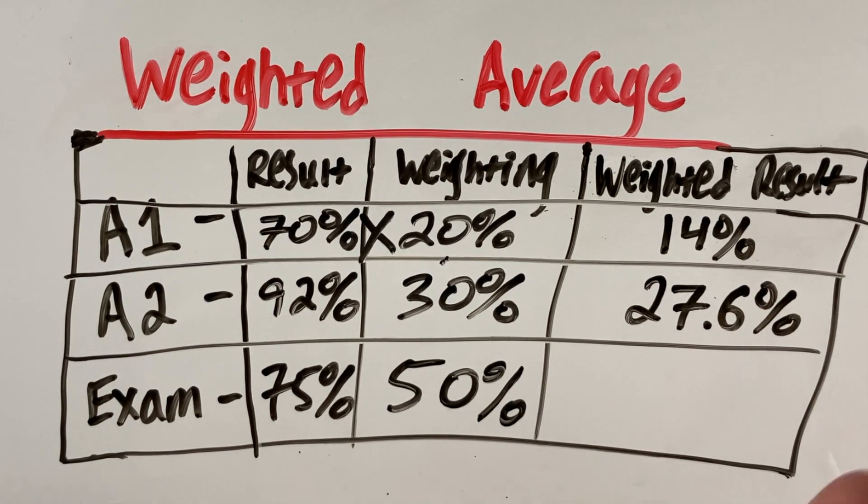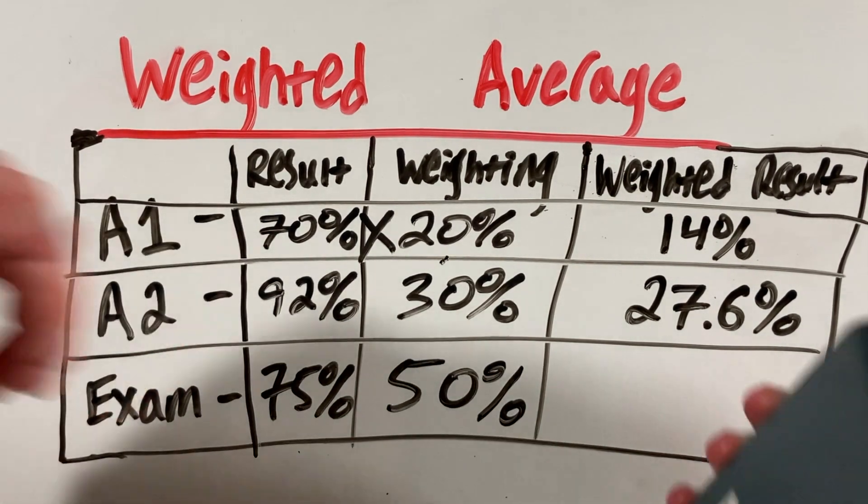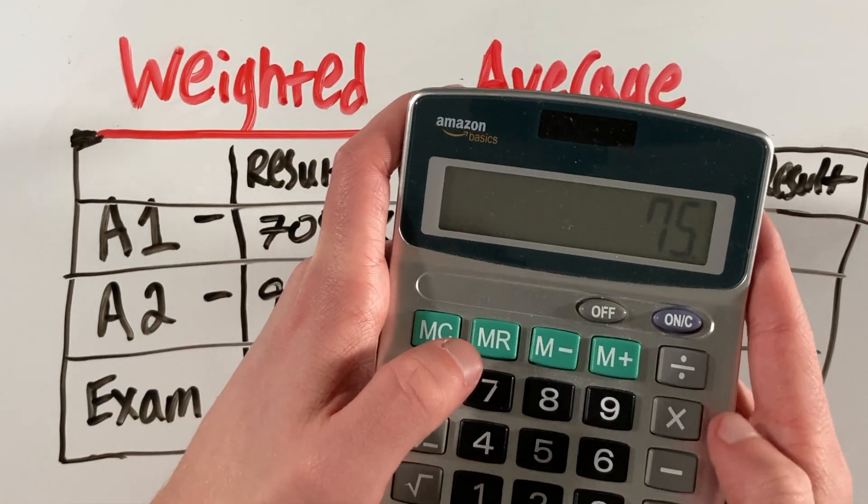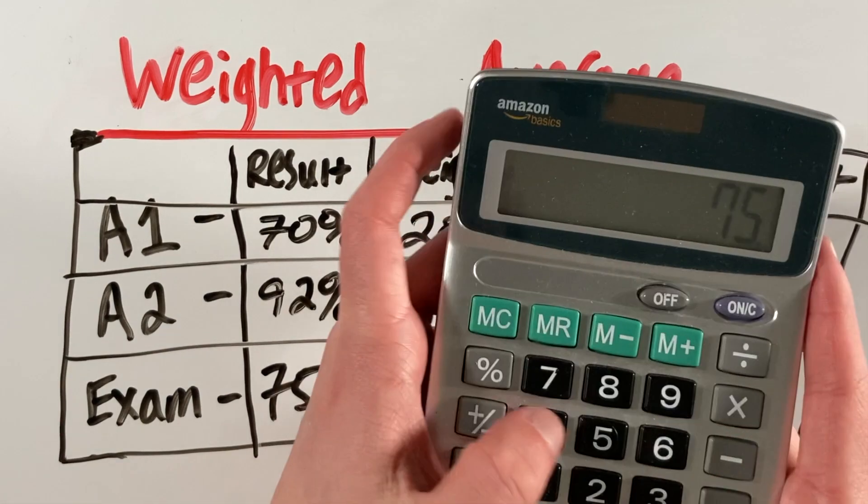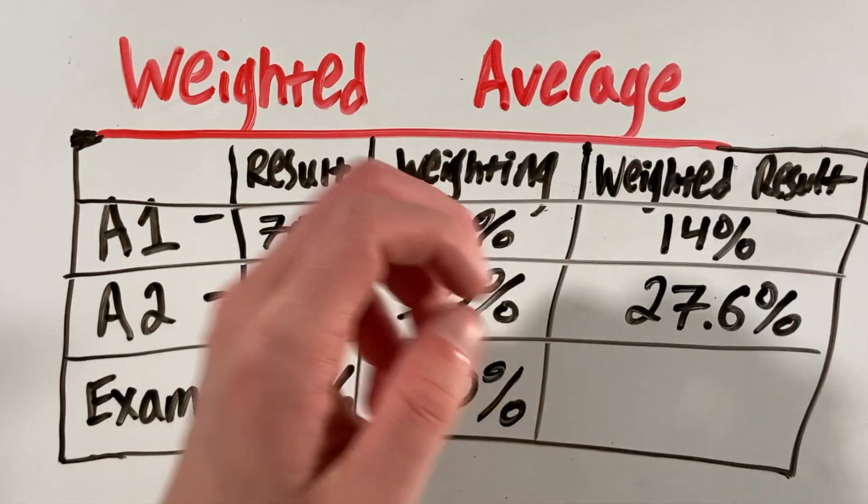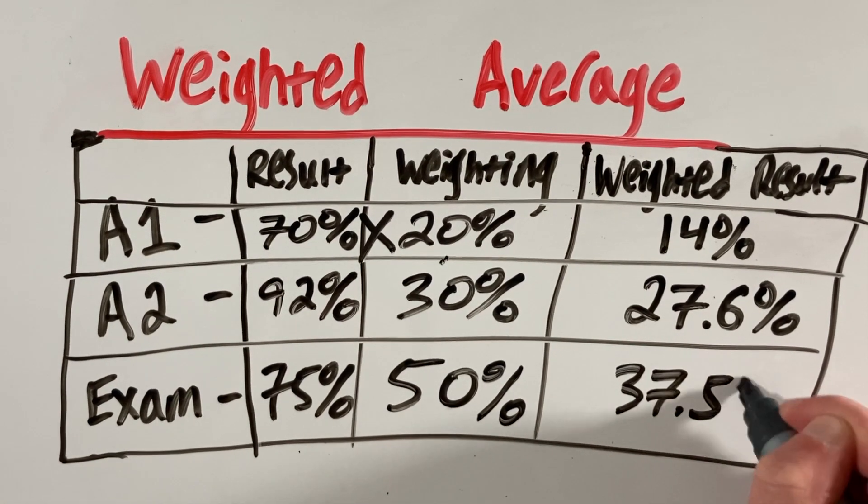Remember, we're dealing with percentages. Finally, we have the exam, which is worth 50% of our result or our weighted average, meaning we can do 75 times 50%, which is 0.5, giving us 37.5%.